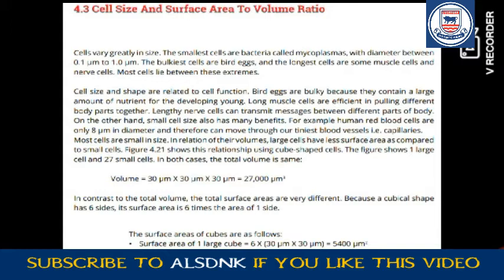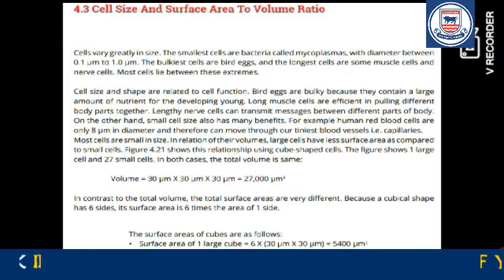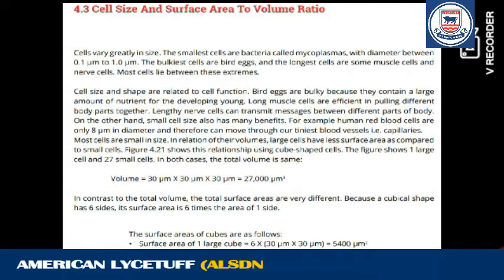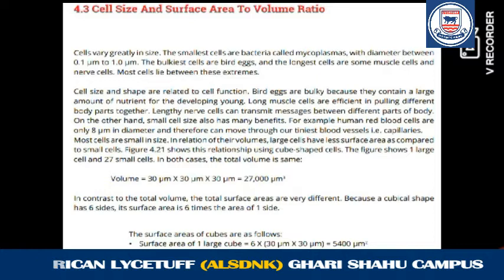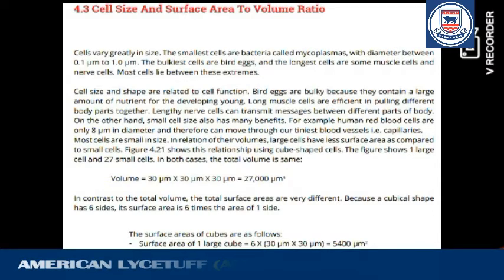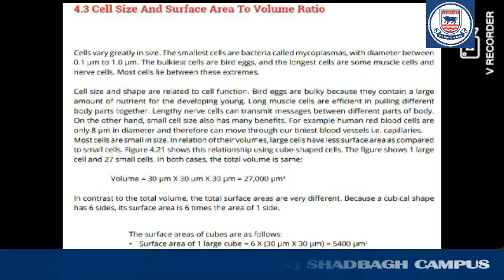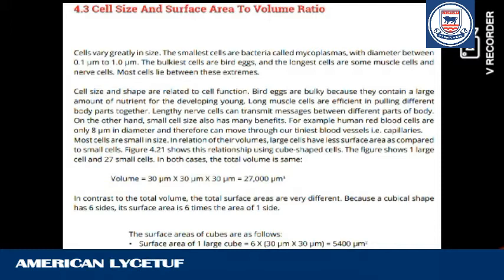For example, human red blood cells are only eight micrometers in diameter and therefore can move through our thinnest blood vessels and capillaries. Red blood cells need to carry oxygen to every cell in the body, including at the finest level. Among blood cells — red blood cells, white blood cells, platelets, leukocytes — red blood cells have the smallest size, which is why nature has kept their size very small so they can travel through even the thinnest capillaries.